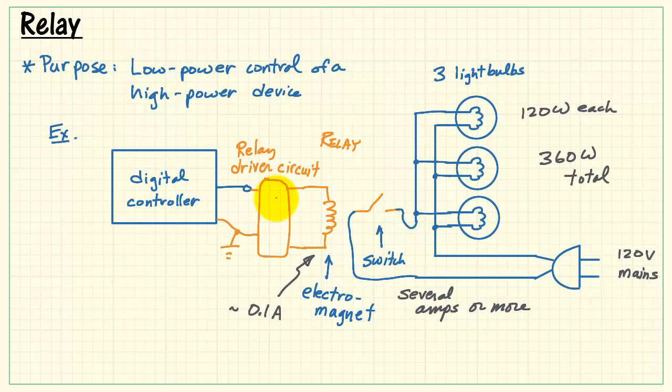Therefore, we still need another intermediary here. The relay driver circuit establishes a connection between the digital device and the electromagnet.